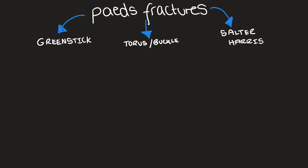Specific to the paediatric population, there are three main types of fracture patterns. The first one is greenstick fractures. Secondly, you've got torus or buccal fractures. And then thirdly, you've got Salter-Harris fractures. So we'll go through each of these in detail now.